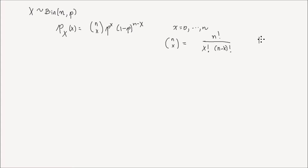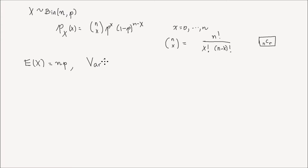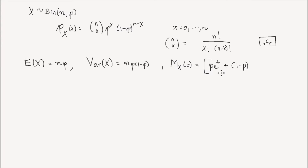Most calculators have a key labeled nCr that calculates n combination r. In this lesson, we want to show that the expected value of a binomial distribution, E[X], is equal to n times p. We also want to show that the variance of x is n times p times 1 minus p. And the MGF, m_x of t, is p times e to the power of t plus 1 minus p, the whole expression to the power of n. That is the goal of this lesson — to show these three identities.